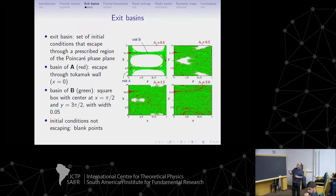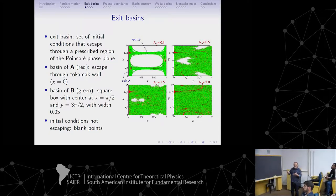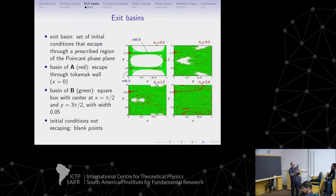We consider another escape in the middle of the plasma — it can be a diverter plate — and paint green those initial conditions which escape through that exit. As the intensity of the second wave increases, these basins acquire a very complicated shape that reminds us of the fractal basin boundaries that Ulrika showed us yesterday. They have the same underlying structure — this is a beautiful thing. Obviously, not all initial conditions will escape because we have islands, and an orbit trapped in an island will never escape. So most orbits will escape, but not all.